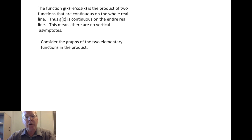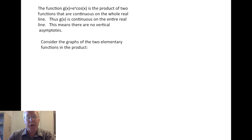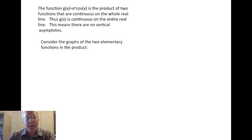The function e to the x cosine x is a product of two functions that are both continuous on the real line. So g of x is continuous on the entire real line, which means there are no vertical asymptotes. Continuity means the function must be smooth with no big jumps, and that tells us there are no vertical asymptotes. This holds for continuity on the whole real line.